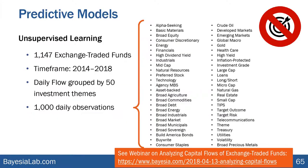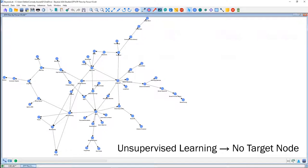Let me give you an example: the domain is exchange-traded funds — a type of investment observed over a number of years. We observed specific groups of investments: agriculture, industrials, telecommunication, utilities, energy, and so on — investments grouped by category or investment theme. We wanted to see how they all relate to each other. Here's a network produced with unsupervised learning. There is no target node here; we're not focusing on anything particular.